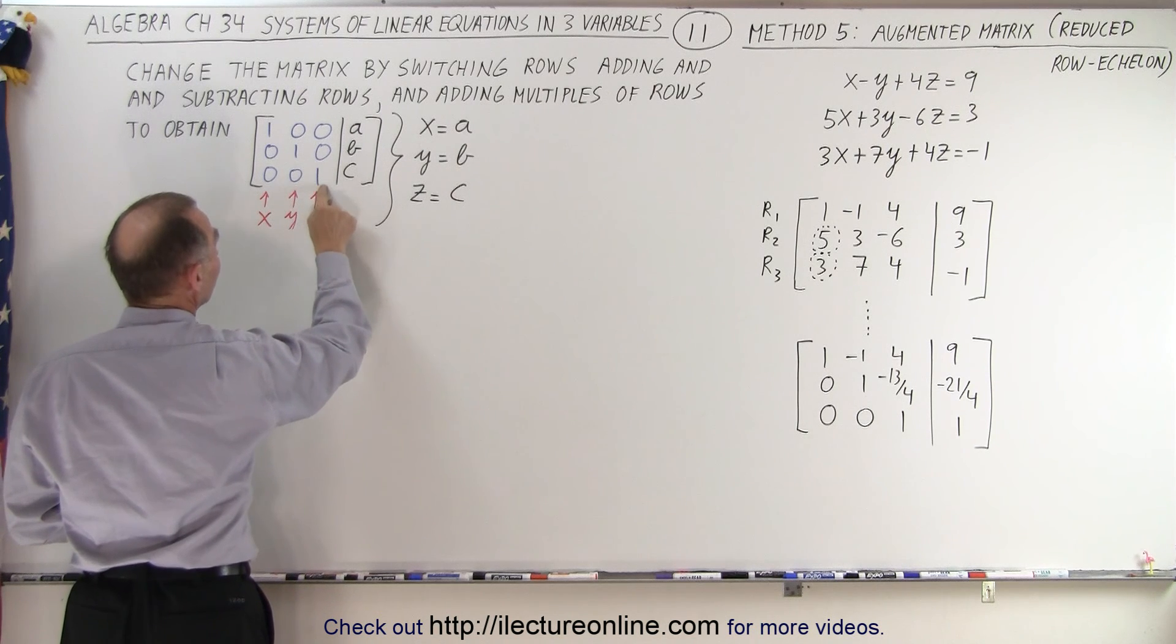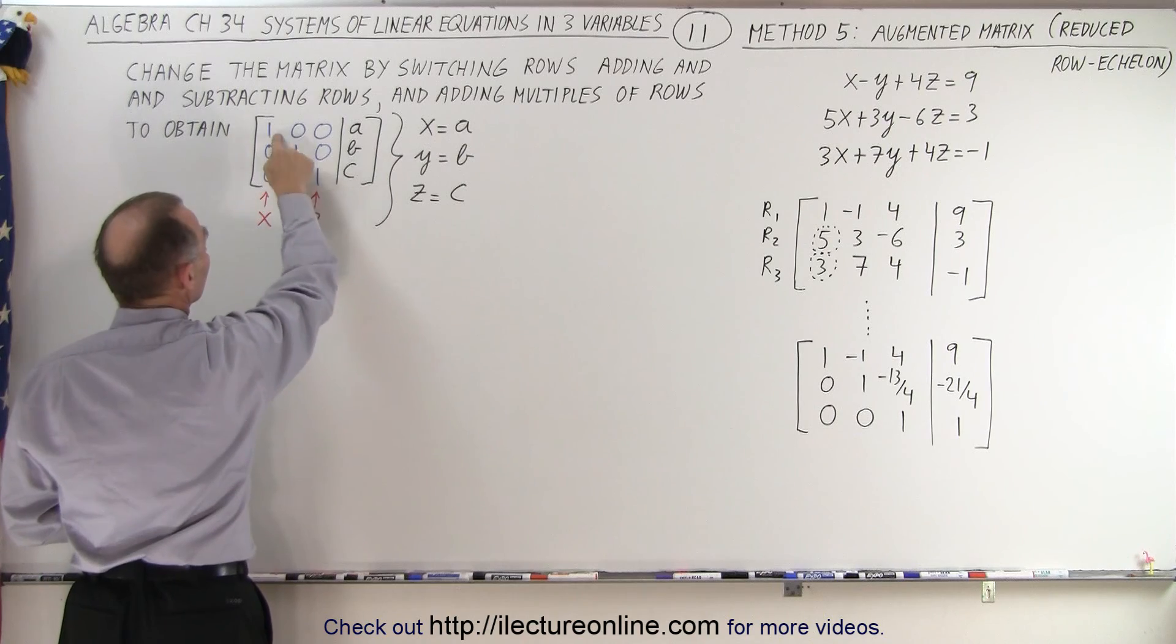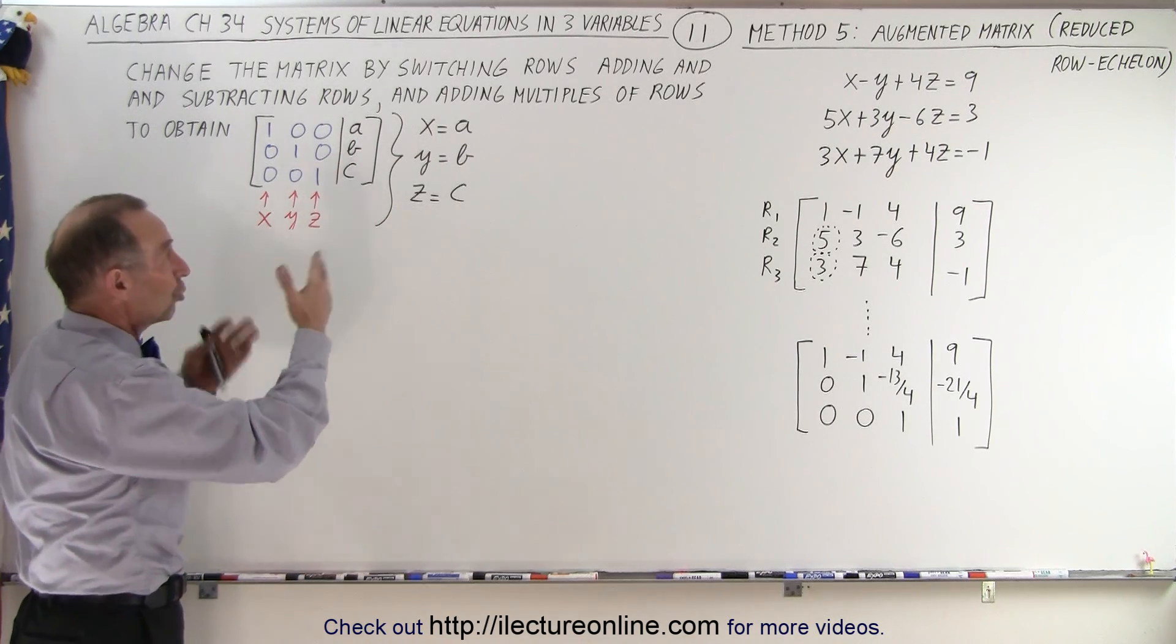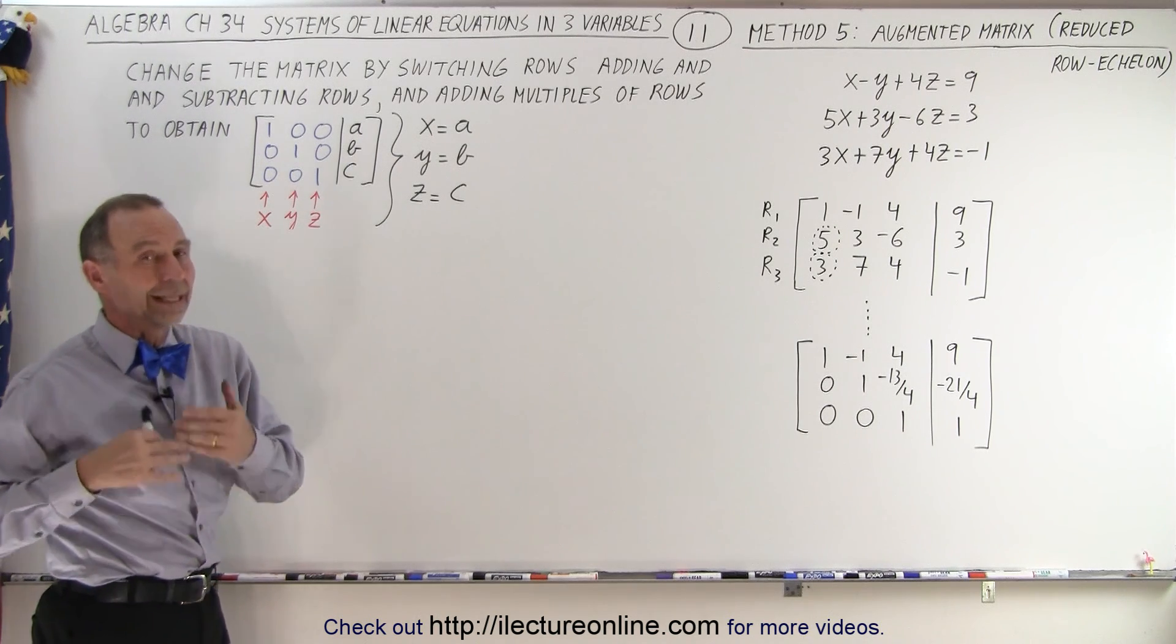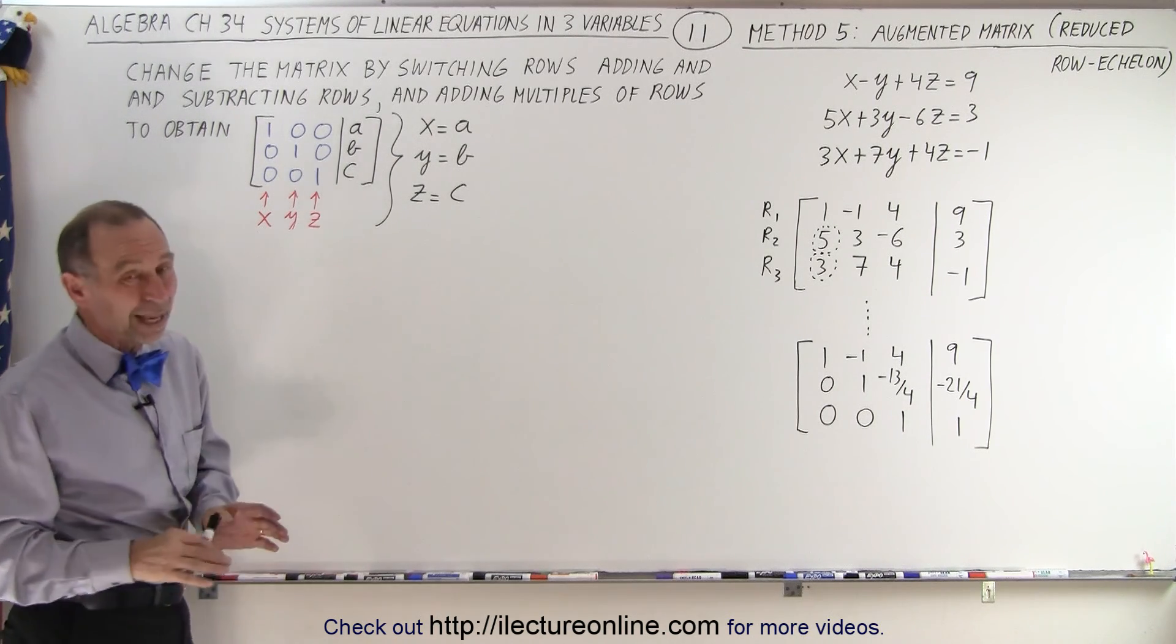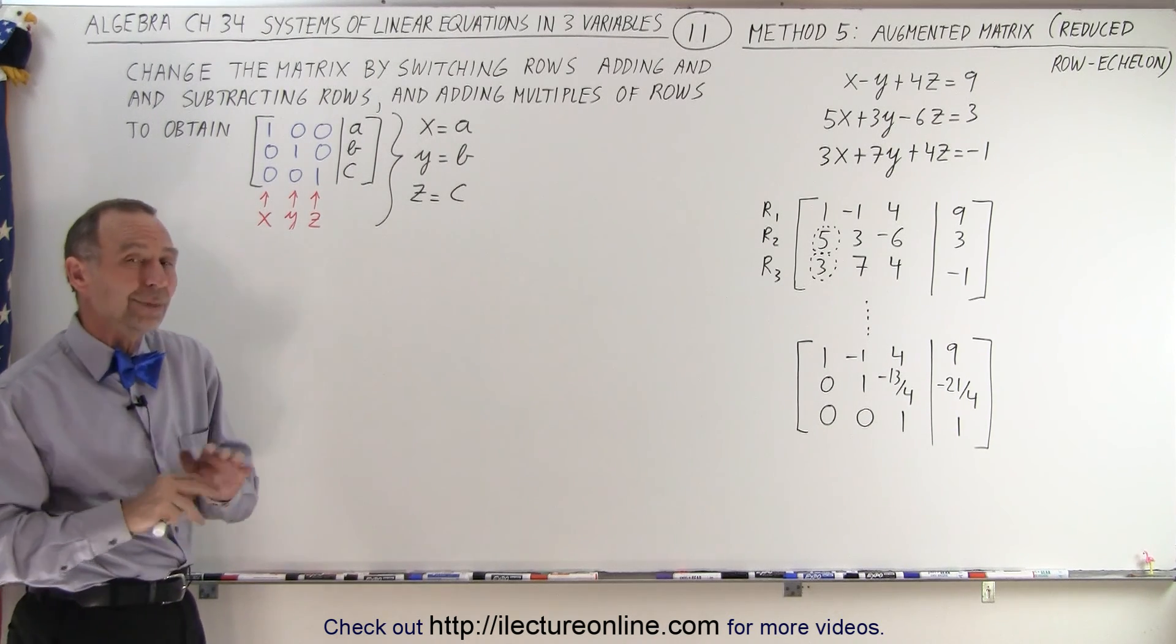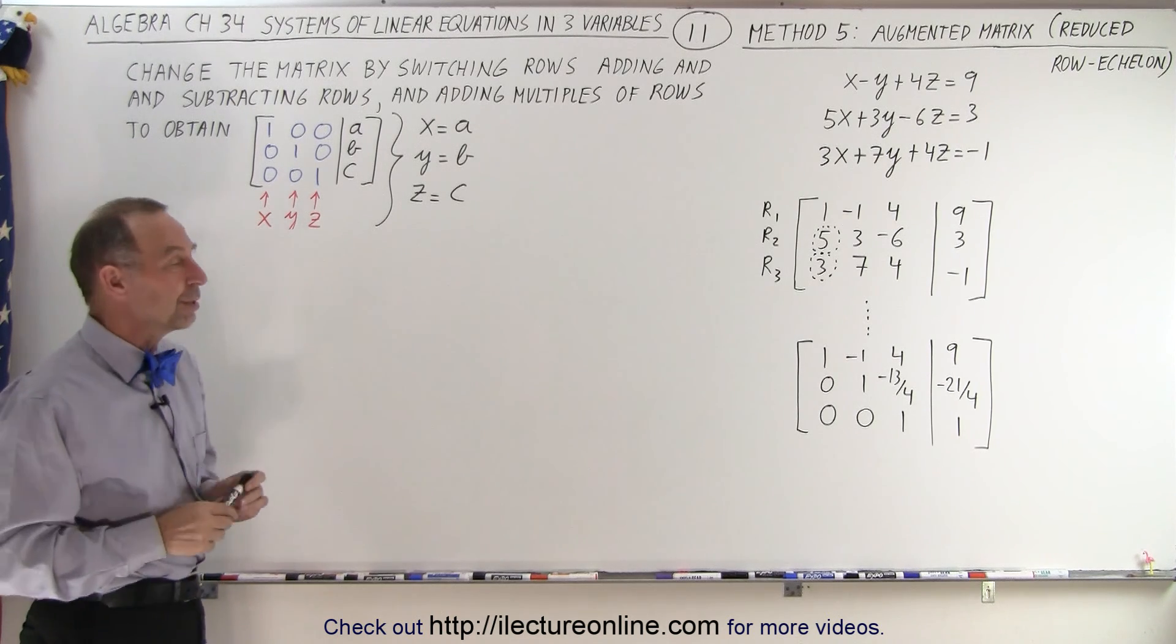Here we can clearly see that z is equal to c, y is equal to b, and x is equal to a. So that makes it really easy to pick off the solution for our system of linear equations. We just have to go a little bit further. Sometimes it's a lot of work, especially when things get very gnarly with decimals and fractions, but in this case, it's probably not going to be too bad.